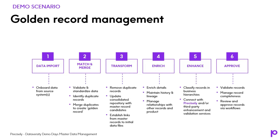First, you have to get the data in from certain sources — from spreadsheets, from people, et cetera. You need to consider deduplication, which requires standardization and validation. You need to be able to transform data, take field values from one system, concatenate it into another field in the data hub, in the MDM. And then finally, go through enrichment and enhancement processes.